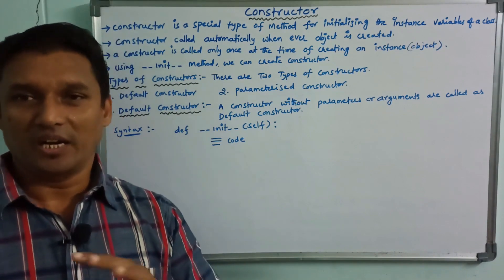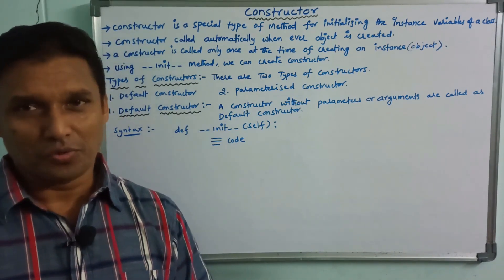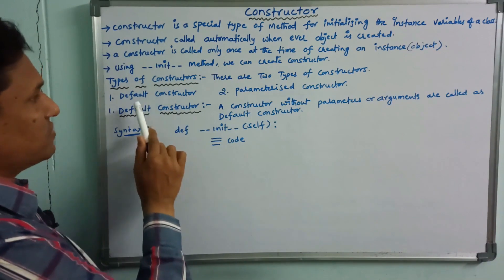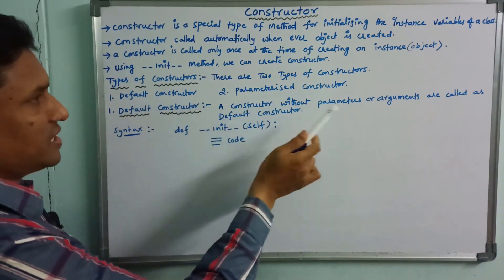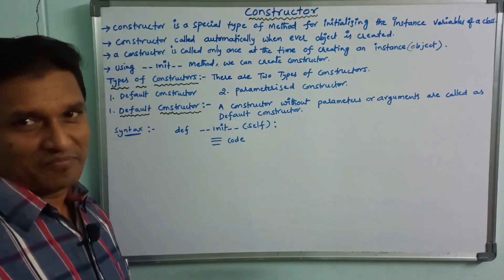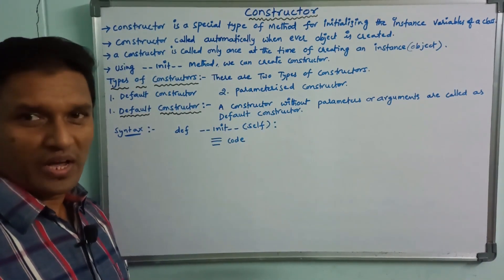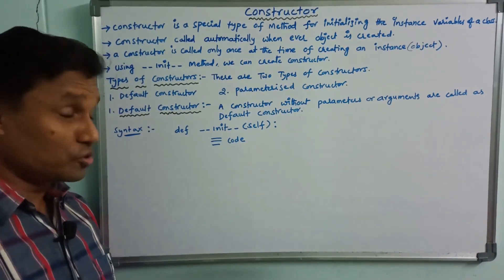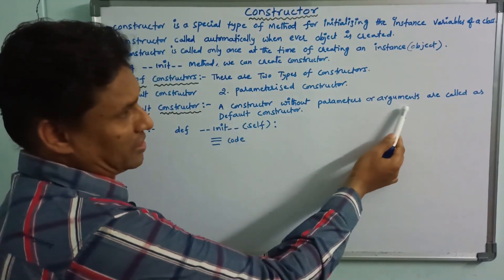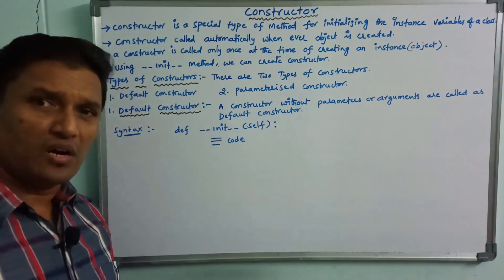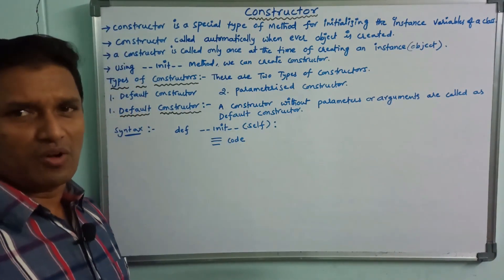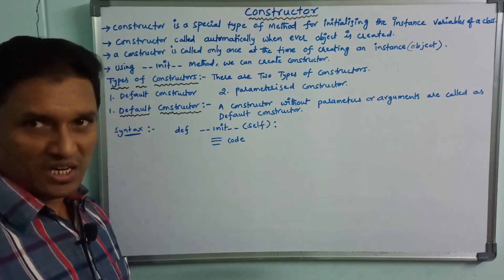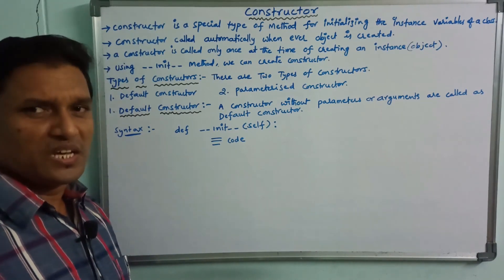We use constructors for implementation. There are only two types of constructors. The first one is the default constructor. The second one is the parameterized constructor. Constructors without parameters or arguments are called default constructors.